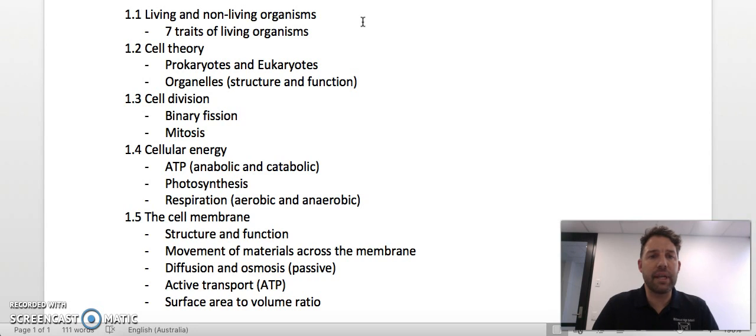1.1 and 1.2 I've made a short video running through those two topics. 1.1 is living and non-living things where we covered the seven traits of living organisms. 1.2 is cell theory where we covered the two types of cells, prokaryotic and eukaryotic, and we looked at the organelles within eukaryotic cells.